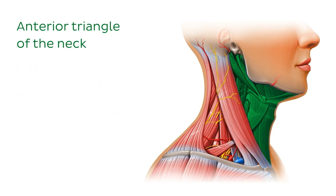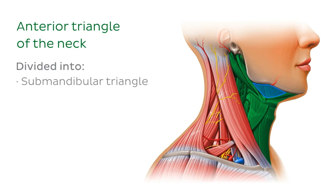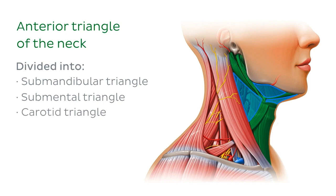The anterior triangle of the neck is further divided into smaller triangles: the submandibular triangle, the submental triangle, the carotid triangle, and the muscular triangle, which will be discussed shortly.